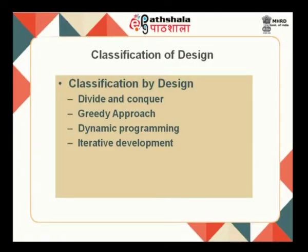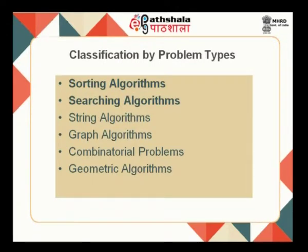Based on implementation, algorithms can be classified as deterministic algorithms and randomized algorithms. In a deterministic algorithm, there is a guarantee that the algorithm will terminate; in a randomized algorithm, no such guarantee can be given. Based on design, algorithms are classified by strategies — the algorithm study is replete with design strategies like divide and conquer, greedy approach, dynamic programming, etc., which will be dealt with in subsequent modules. We can also classify algorithms based on problem types: string algorithms, sorting algorithms, searching algorithms, graph algorithms, combinatorial algorithms, etc.